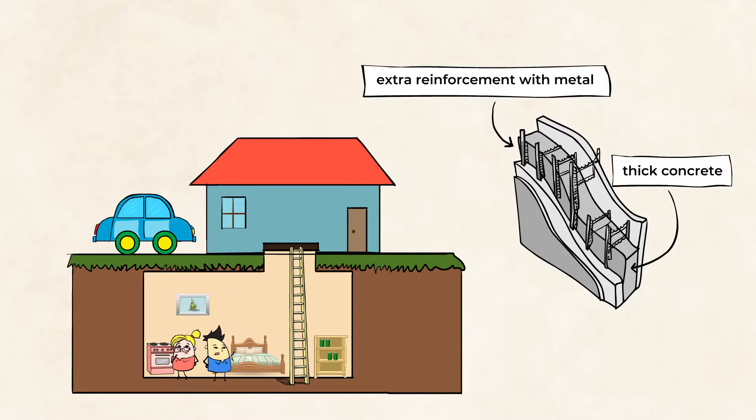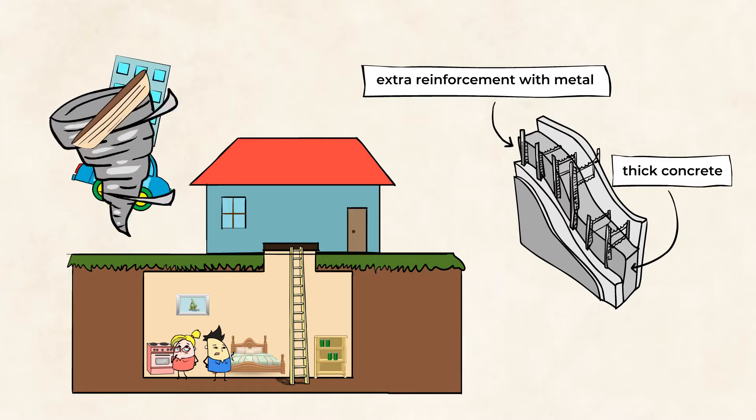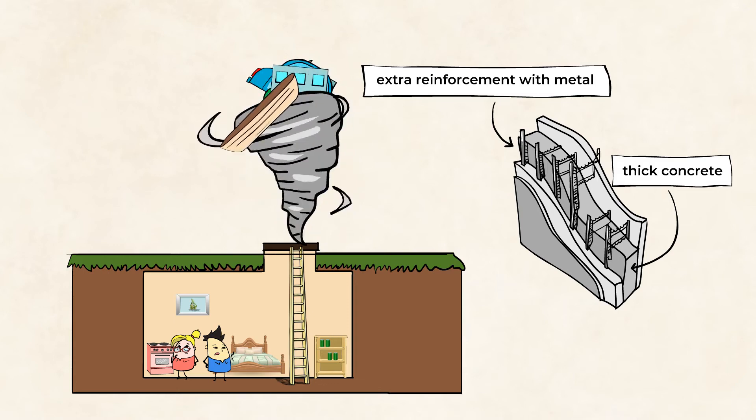People have these shelters under the ground because tornadoes are so strong that they can toss cars, boats, and even buildings and houses. No one can stop a tornado from happening, but engineers are coming up with new ways to reduce their destruction.